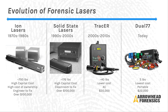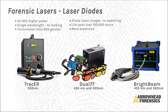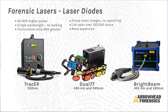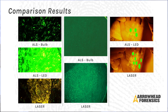The tracer laser weighs about 40 pounds, costs around $35,000 to $40,000, and is single wavelength — green 532. Then today with the dual 77, we have a five-pound laser: 7 watts blue, 7 watts green out of a five-pound box, portable, around $22,000. The tracer has an optically pumped semiconductor laser diode — 20 to 40 times more power than any LED. It's a single wavelength with no spectral leak, so when it's 532 it's a straight peak at 532.